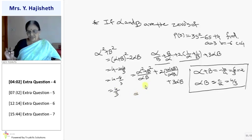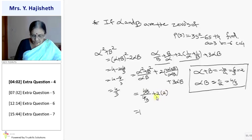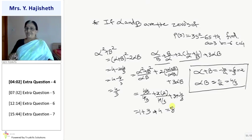Now all values are ready. The second part: 2 times (alpha + beta) / (alpha·beta) = 2 times 2 divided by (4/3) = 3. The third part: 3 times alpha·beta = 3 times (4/3) = 4. So the total answer is 1 + 3 + 4 = 8.